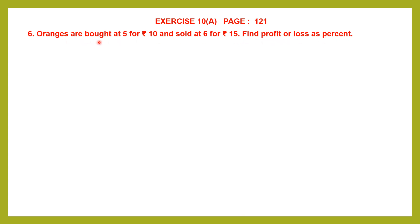Now first, when oranges are bought, that is the cost price. So this is the cost price of 5 oranges, and sold at means selling price. Selling price of 6 oranges is 15 rupees. The numbers are different, so we have to find the cost price of 1 orange and the selling price of 1 orange. Then the numbers become the same and we can proceed from there.